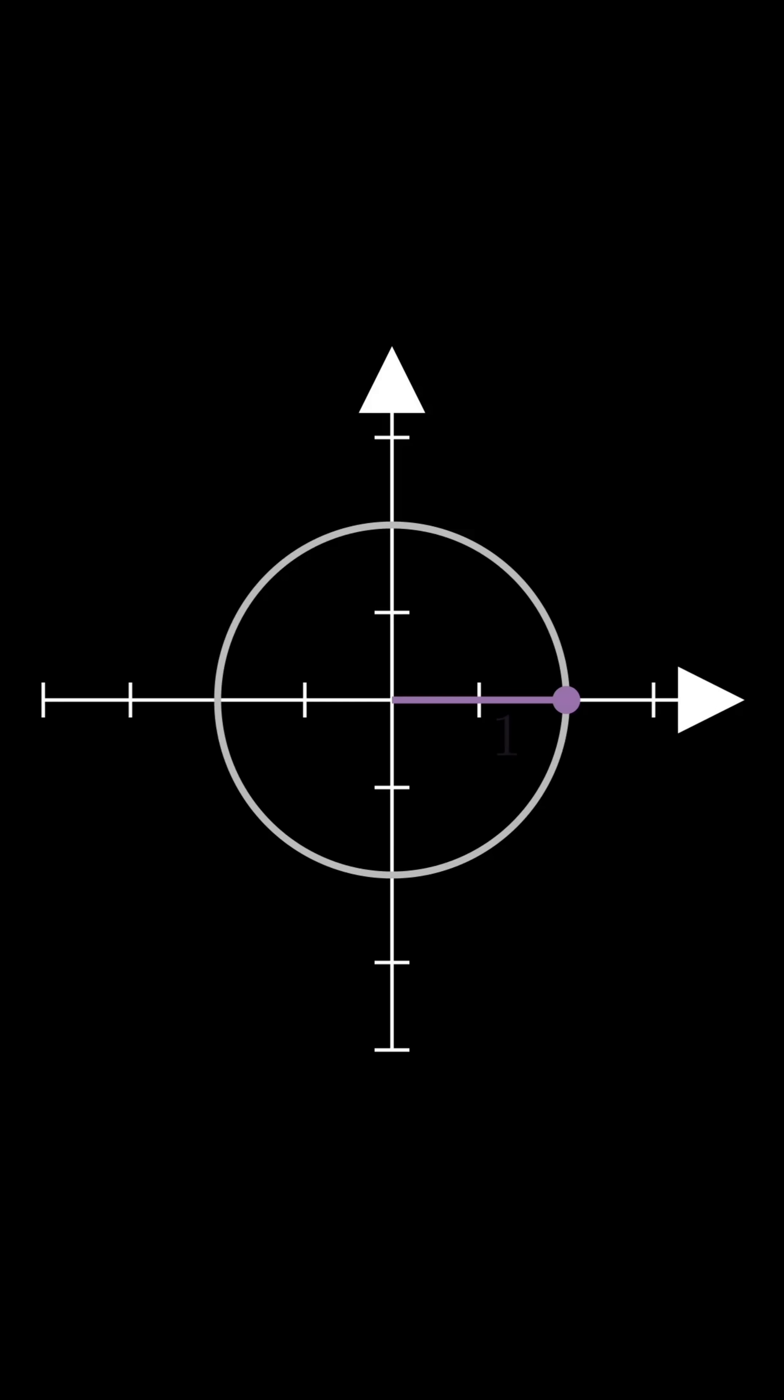We can label each point on the graph as cosine of theta, i sine of theta. We can then rotate this point around the circle circumference until we reach our point i.